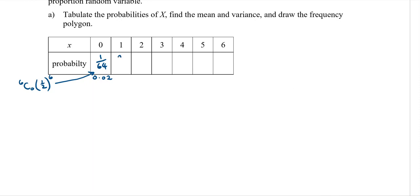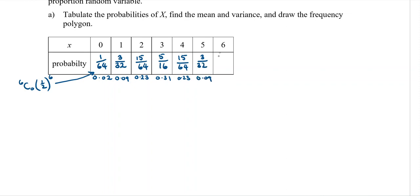3 over 32 as a decimal is 0.09. Then 6C2 gives 0.23. They are symmetrical: 5 over 16 is 0.31, then back to 15 over 64 which is 0.23, then 3 over 32 giving 0.09, and 1 over 64 for the six giving 0.02.